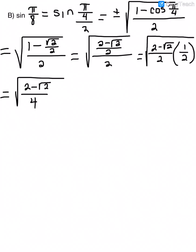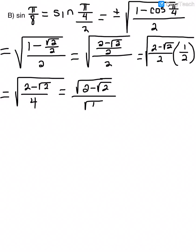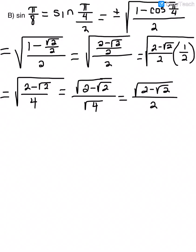I can separate this into two radicals: √(2 − √2) over √4. Since √4 = 2 (a perfect square), this gives (√(2 − √2))/2. The denominator is not a radical, so I don't need to rationalize, and that is my answer.